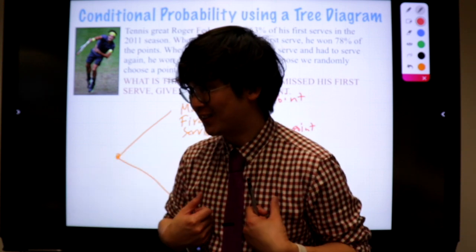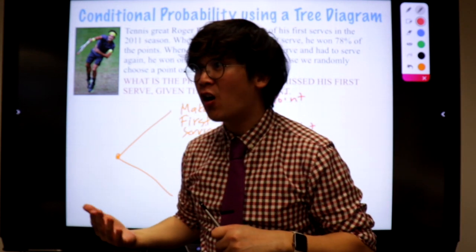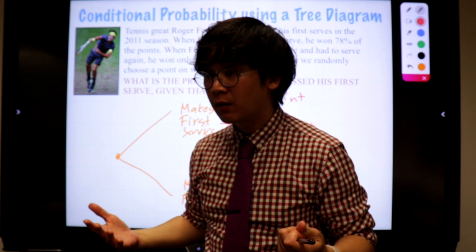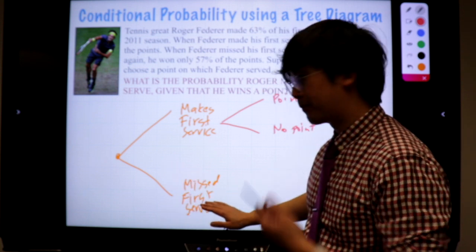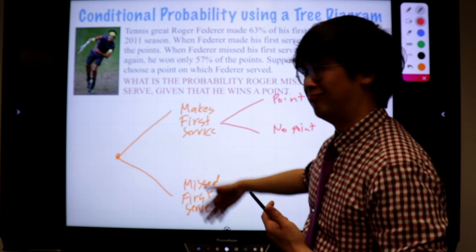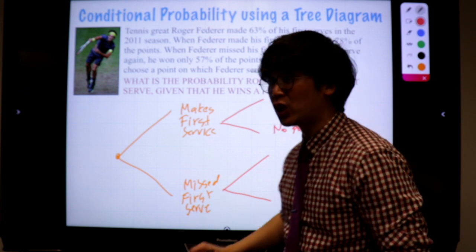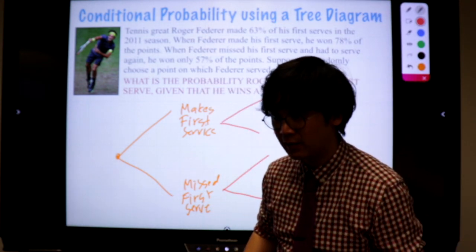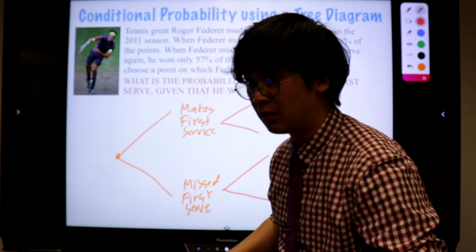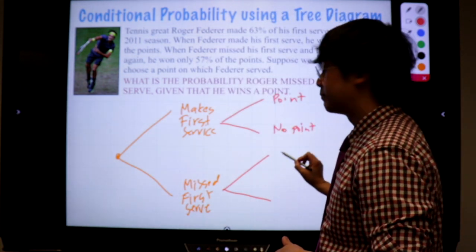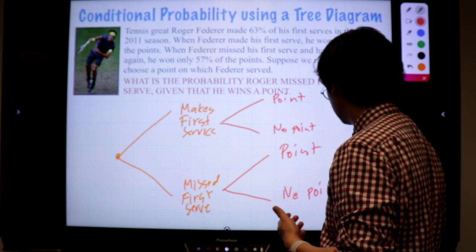When he missed the first serve, can we still win a point? Yes — missing the first serve means we made it on the second serve. So we can still branch out as point or no point on the second serve. That's another way of translating it: missing the first serve means we made it on the second serve, and from there you can still win a point.